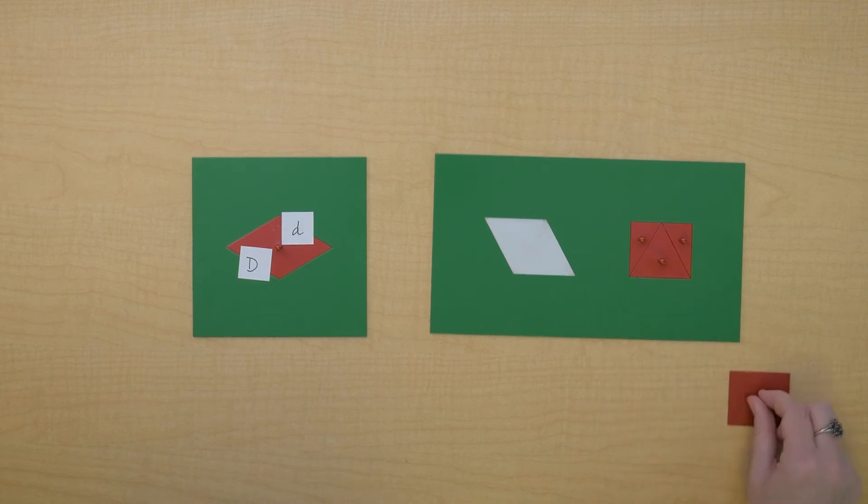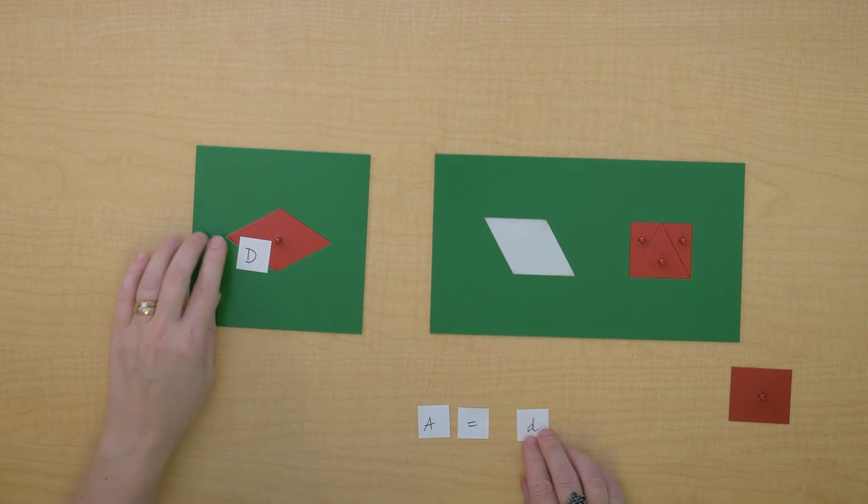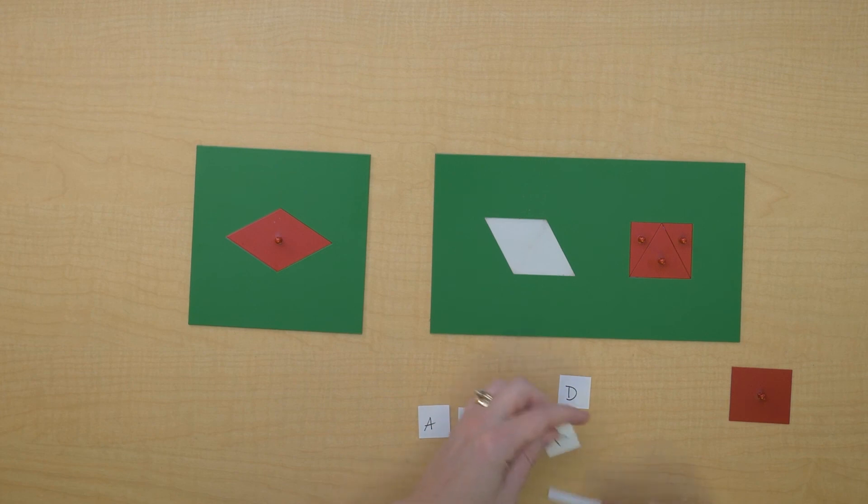So in fact, if we wanted to find the area, we could multiply the base, the minor diagonal, times the major diagonal divided by 2.